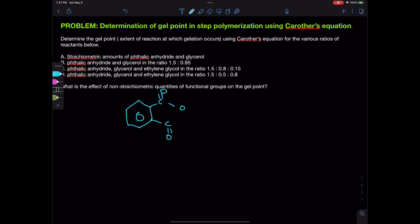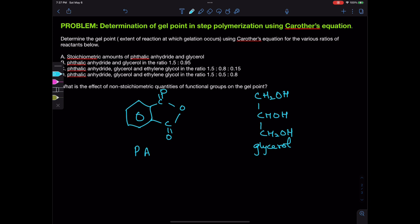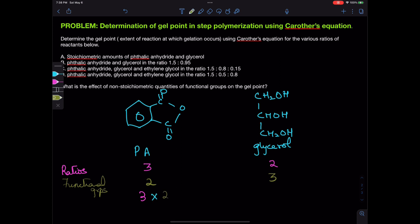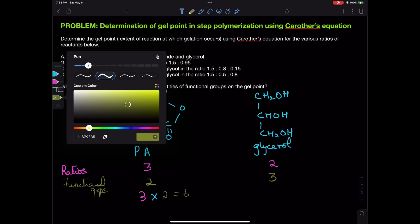What is the effect of non-stoichiometric quantities of functional groups on the gel point? We start by writing the structures of phthalic anhydride and glycerol. Phthalic anhydride has two carboxyl groups, and glycerol has three hydroxyl groups. For stoichiometry: 3 moles of phthalic anhydride give 6 carboxylic acid groups, matching 2 moles of glycerol giving 6 hydroxyl groups. So the stoichiometric ratio of phthalic anhydride to glycerol is 3 to 2.